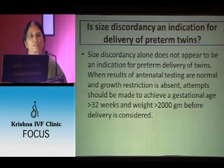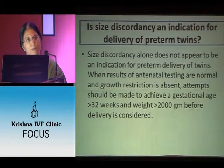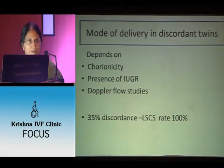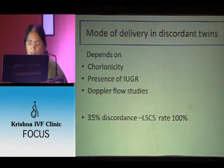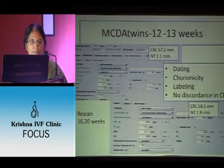When there is discordancy, do we need to deliver? The evidence says size discordancy alone does not appear to be an indication for delivery. When antenatal testing results are normal and growth restriction is absent, try to prolong the pregnancy beyond 32 weeks and wait for a weight of at least 2 kilograms before making any delivery decision. When planning delivery, consider chorionicity, presence of IUGR, and surveillance test results. If there is 35% discordancy, one baby is definitely growth restricted and a cesarean section is needed.